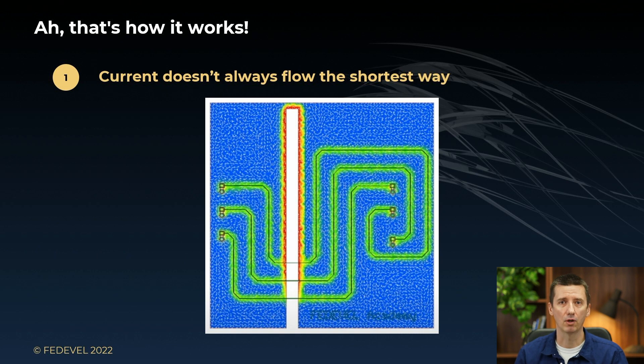And this may cause number of issues. For example, the return currents from all these three tracks are going to mix together. Or this may create different voltages on the left and right part of this ground plane. Which can cause, for example, EMC problems.